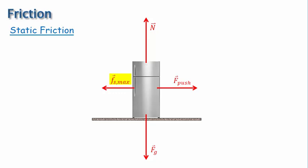As a result, there is now a net force on the refrigerator. And since there is a net force, the refrigerator begins to accelerate, and therefore slide to the right. At this point, when the refrigerator is sliding, the friction changes from static friction to kinetic friction, and kinetic friction has a different behavior that we will discuss in a little bit.